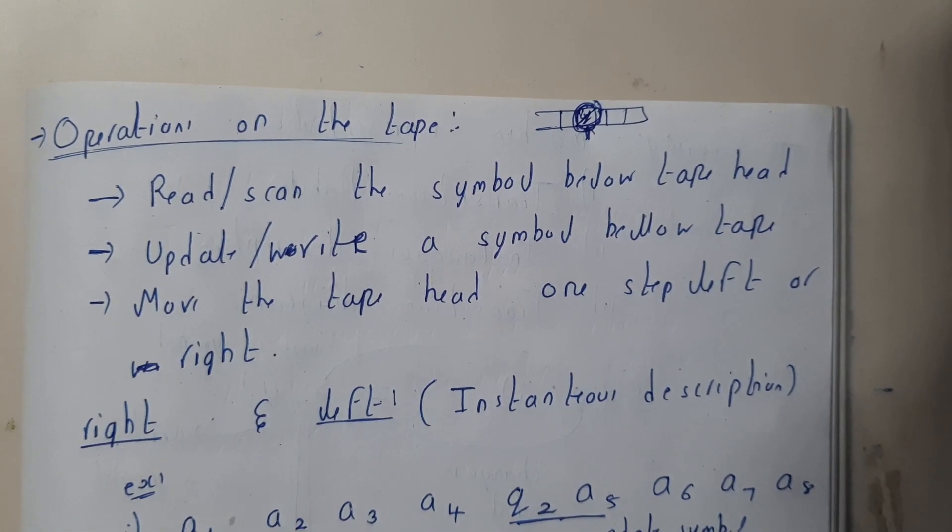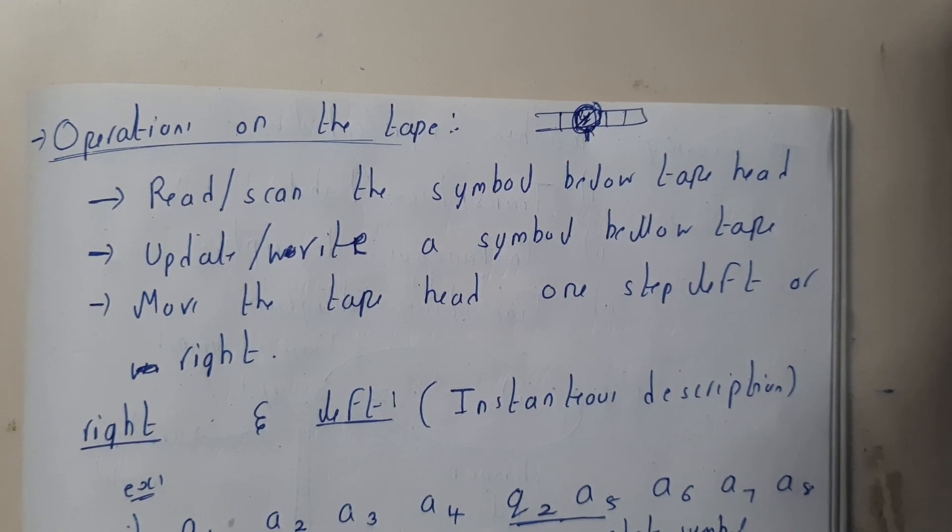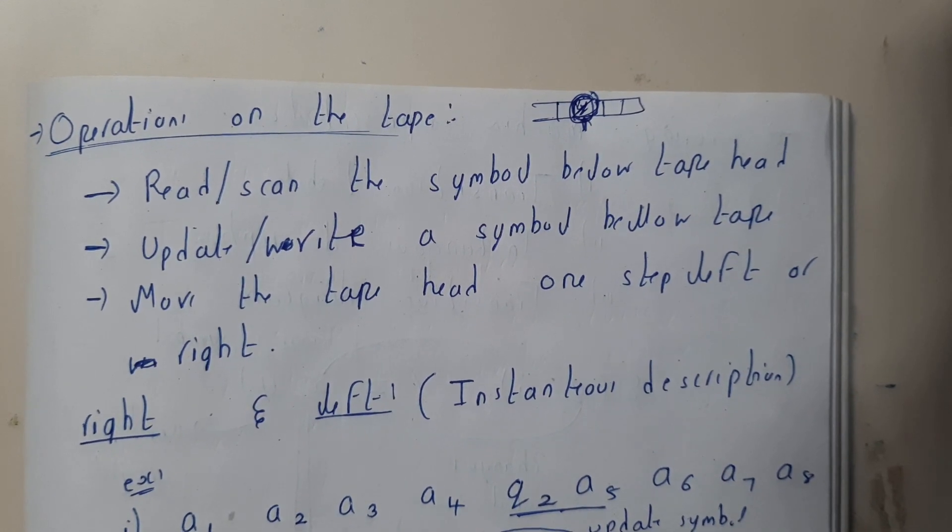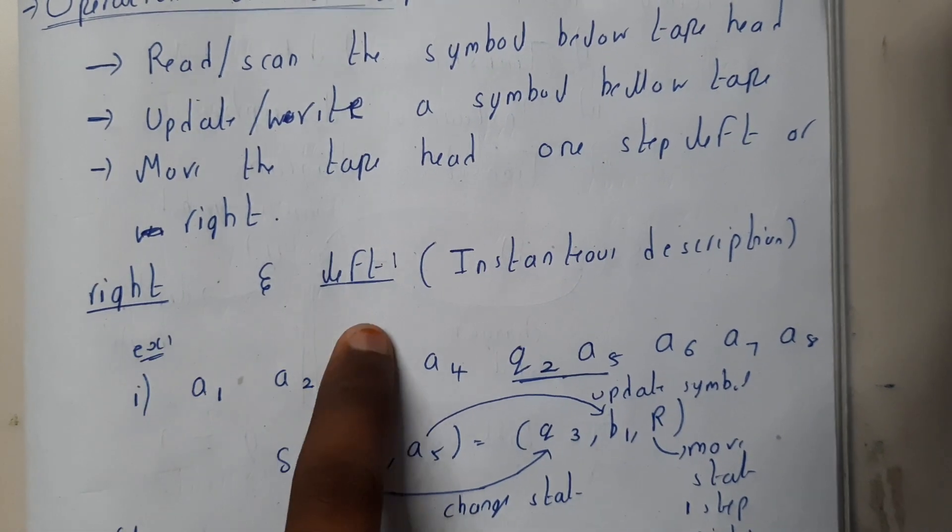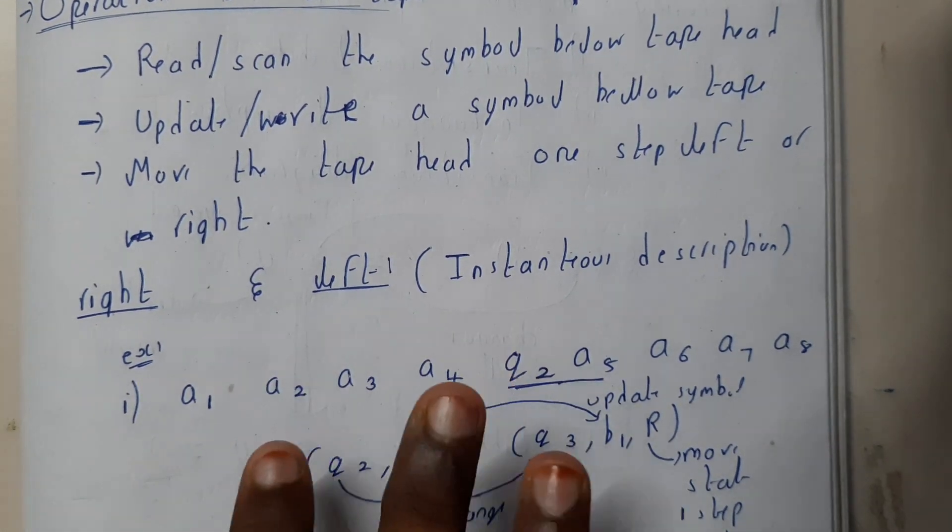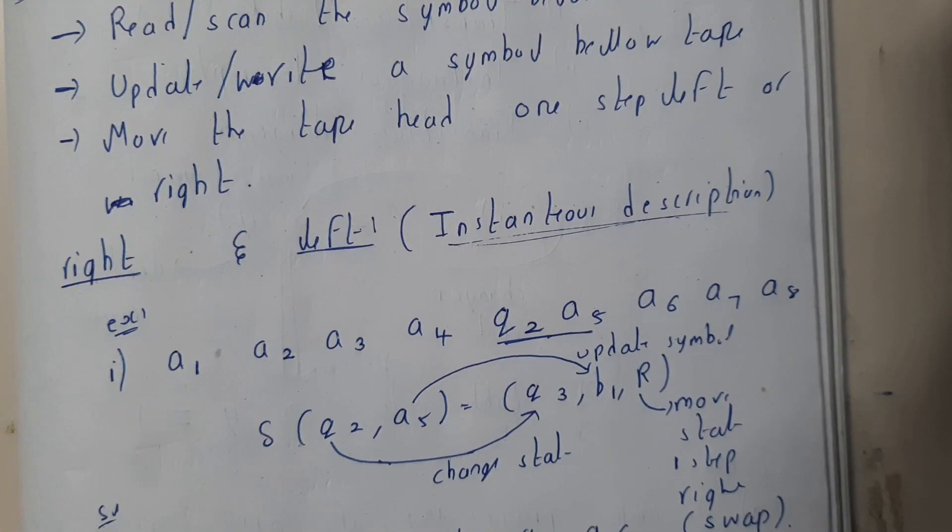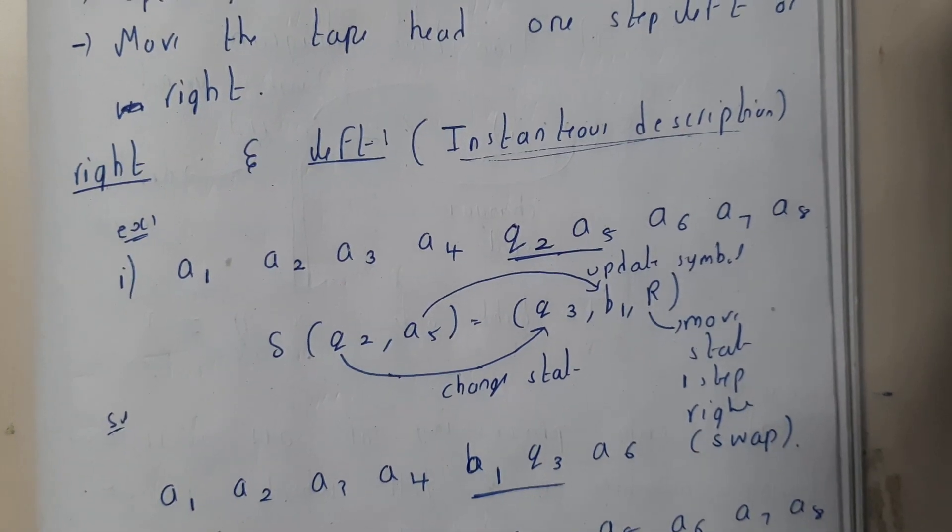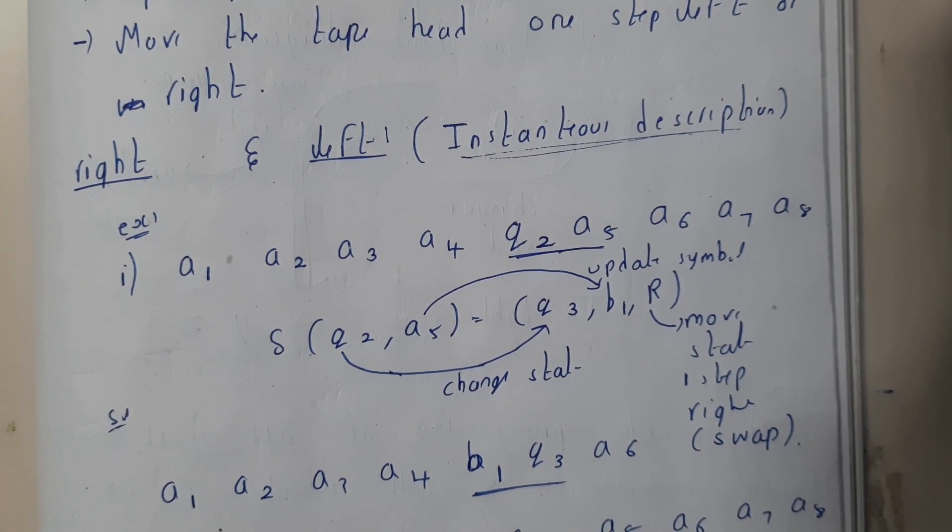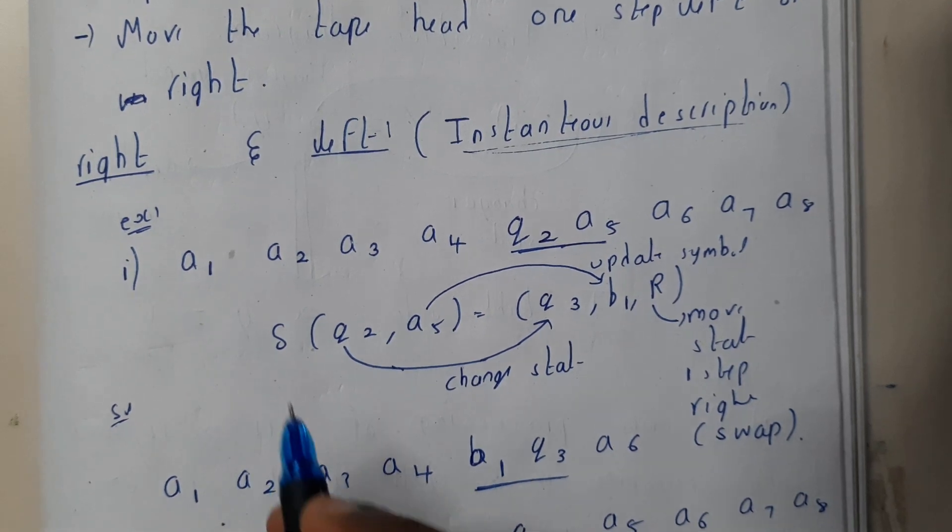What is the right movement or what is the left movement? Right and left - let us go through a small description. Instantaneous description: we have gone through the instantaneous description of pushdown automata. Basically, instantaneous description is the informal way in which you can solve a problem. Let us take a small example, one for right and one for left.